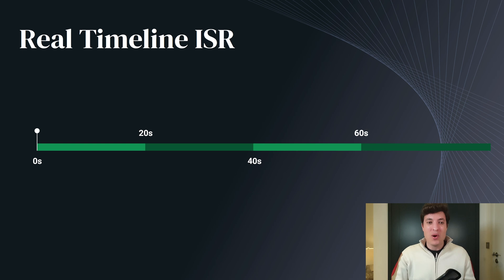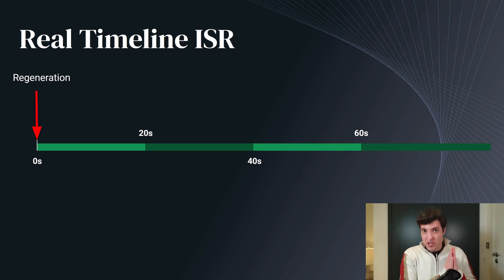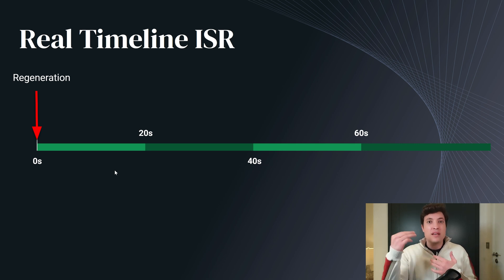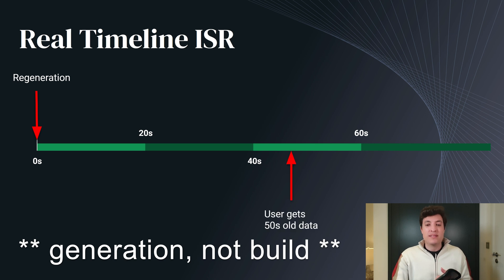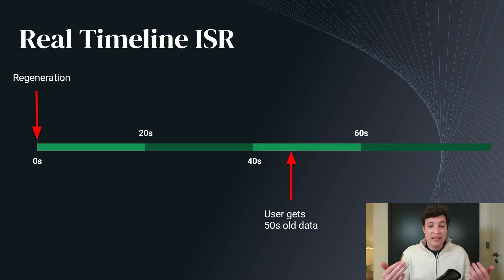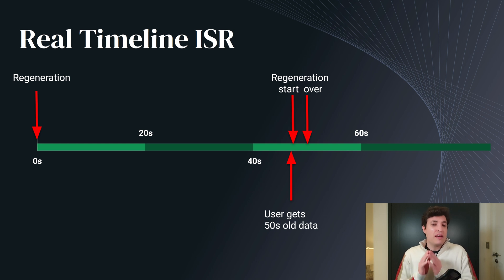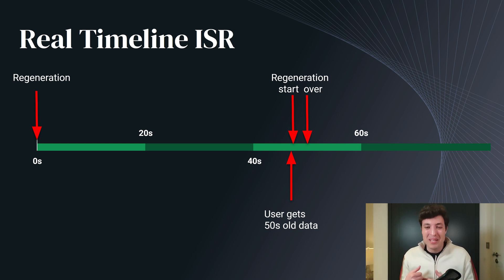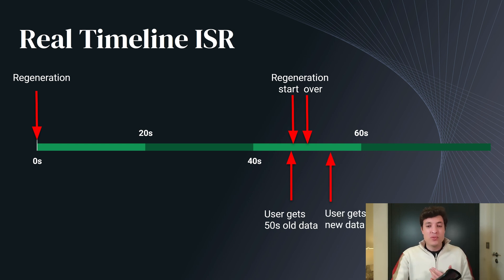Let's see the diagram of a real timeline for incremental static regeneration. Let's say that at zero seconds a generation of a component happened. Anyone that requests a page between 0 and 20 seconds will just receive whatever is in cache — it doesn't trigger any new build for Next.js. Anyone that requests a page after, say, 50 seconds will get data that is 50 seconds old. Next.js behind the scenes will start a generation, and let's say each generation takes 500 milliseconds depending on your database query speed.